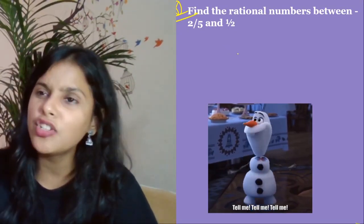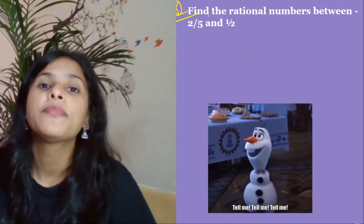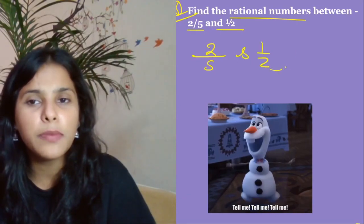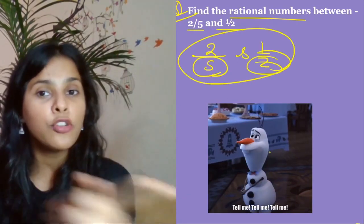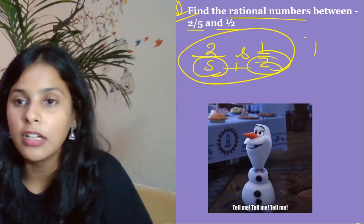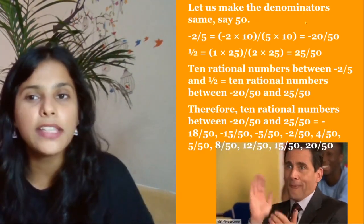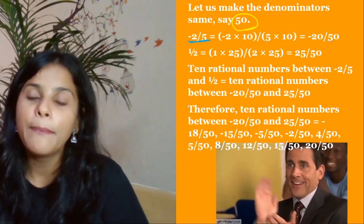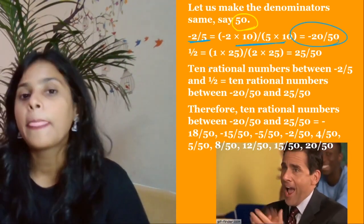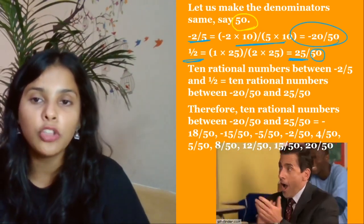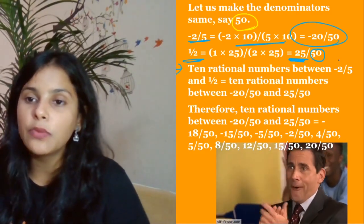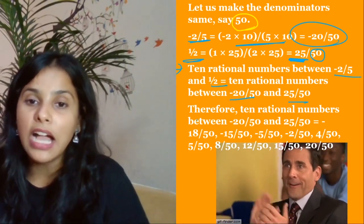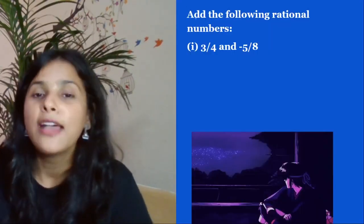Find rational numbers between 2/5 and 1/2. To find rational numbers between 2/5 and 1/2, first make the denominators equal. Let's make the denominator 50. So 2/5 becomes 20/50, and 1/2 becomes 25/50. Now we can say: 10 rational numbers between 20/50 and 25/50 — any number between them will do. It was a very simple question.